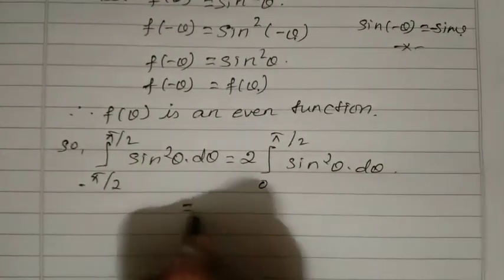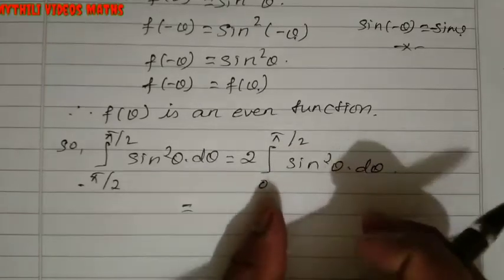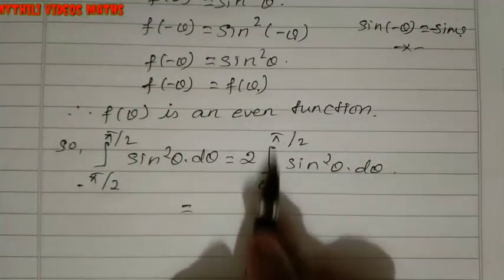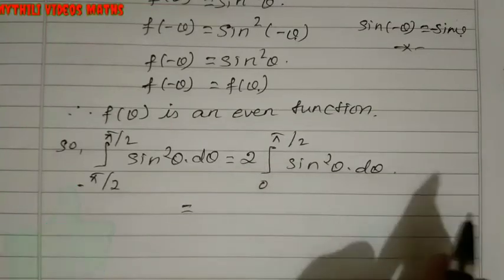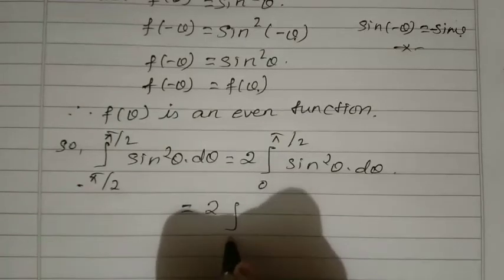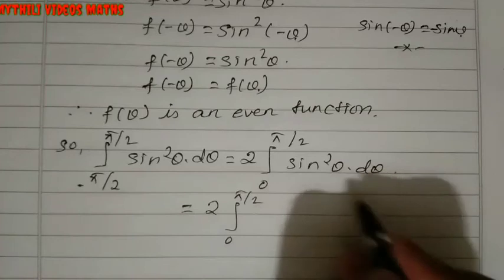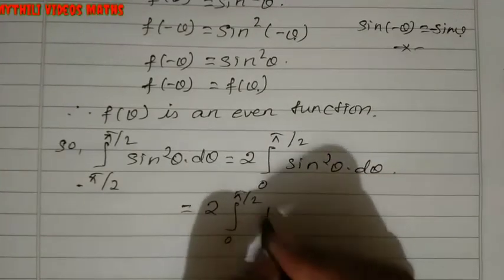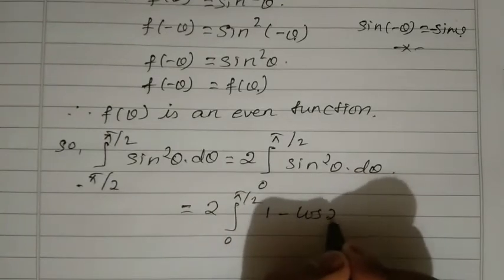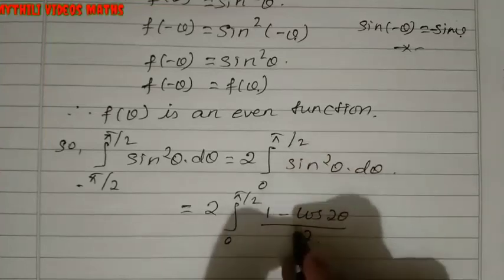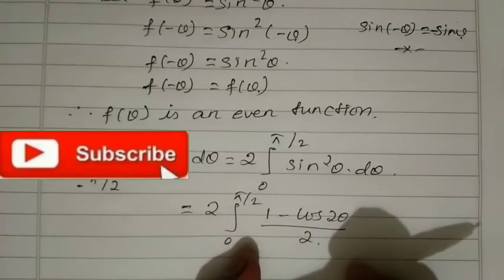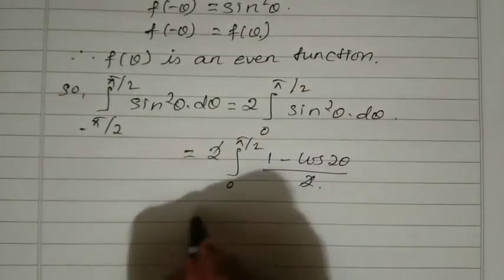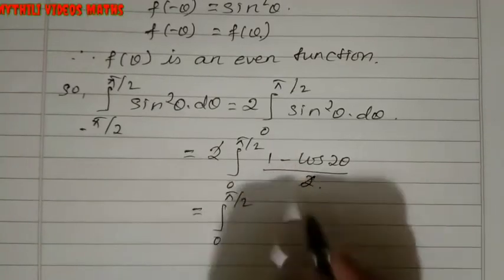Now we have to integrate. Using the formula sin²θ equals (1 minus cos 2θ) divided by 2, we write: 2 times the integration from 0 to π/2 of (1 minus cos 2θ)/2 dθ. The 2 and the denominator 2 cancel, giving the integration from 0 to π/2 of (1 minus cos 2θ) dθ.